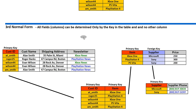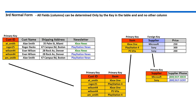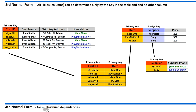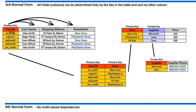Now all columns can be determined only by the key in the table and no other column. The item table side is done — there's no further way to normalize it. There's only the customer table side left. Fourth Normal Form: no multi-value dependencies. In the customer table, the name depends on the customer ID, the address depends on the customer ID, and the subscription depends on the customer ID — so these are all dependencies of the key.